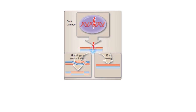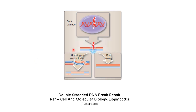This picture shows the two types of double strand break repair: homologous recombination and non-homologous end joining repair. The DNA damage in the form of a double strand break gets corrected by either mechanism, and the choice between these two depends on the phase of the cell cycle.